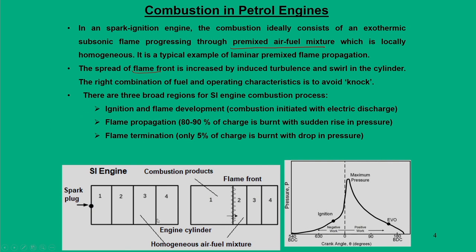If we view the combustion zone, we can think of many layers — zones 1, 2, 3, 4. When the spark ignites zone 1, a flame front is initiated and slowly moves to zone 2, zone 3, and zone 4, progressively burning the charge in each zone.